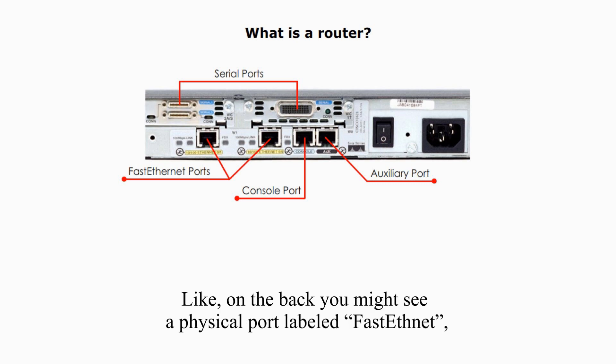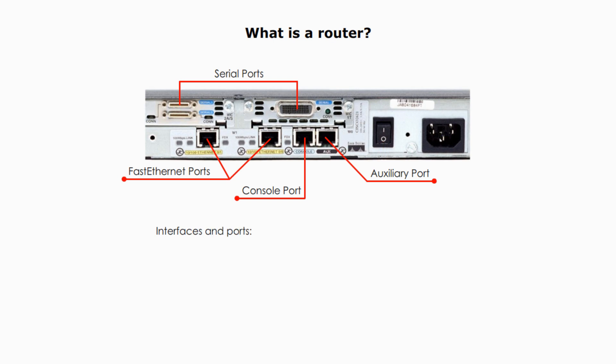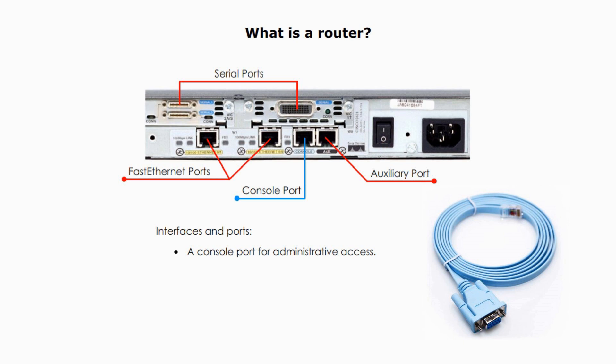For example, on the back you might see the physical port labeled FastEthernet, but when you configure it in Cisco's CLI, you might use F0/0 or F0/1. That's the interface. A console port is for administrator access to configure settings and troubleshooting. This port is normally indicated in baby blue color. The cable used to connect to the router is called the console cable, and it is flat and baby blue in color too. It is also called a rollover cable.